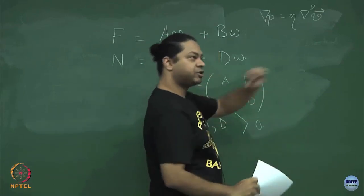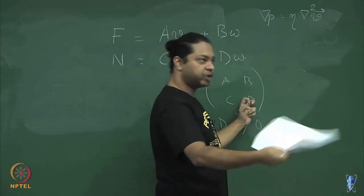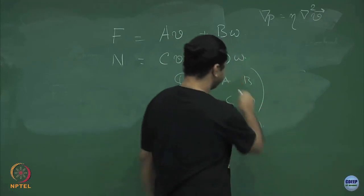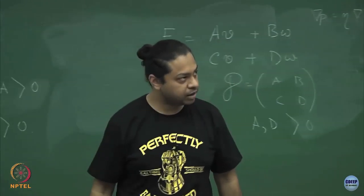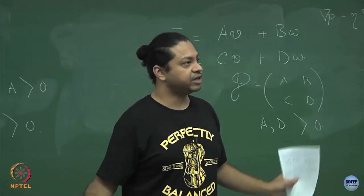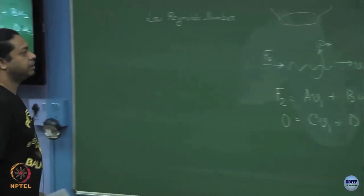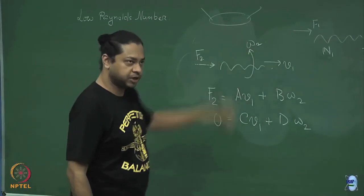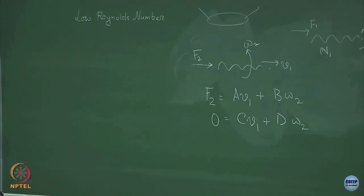So what these elements of the matrix are depends on the exact propeller you are looking at, but the propeller can be generically anything. I am drawing a squiggle which is like a corkscrew, but it need not be a corkscrew. You got this F1 part — remember I am applying a force and a torque on this propeller.